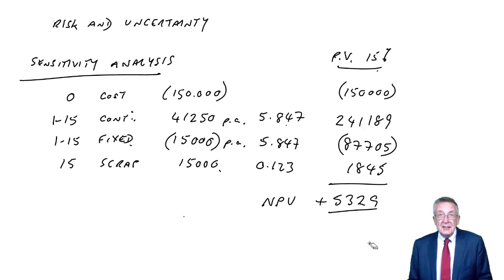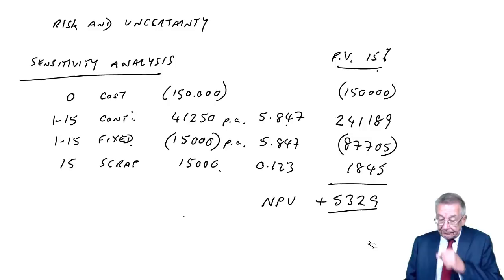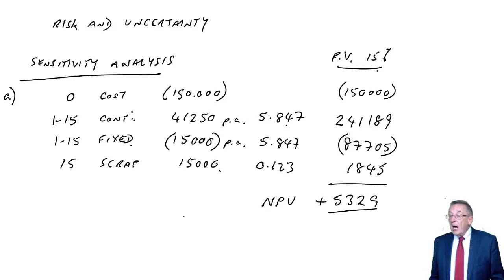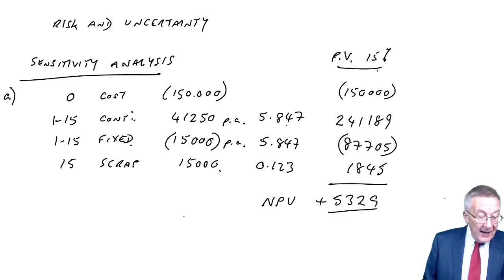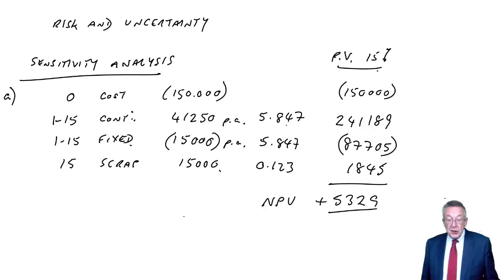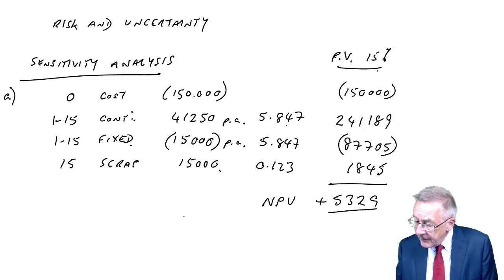With sensitivity analysis, what we look at is effectively how much we could afford a particular item to be wrong by. Part B asks us to calculate the sensitivity to change for a series of variables, starting with the initial investment.